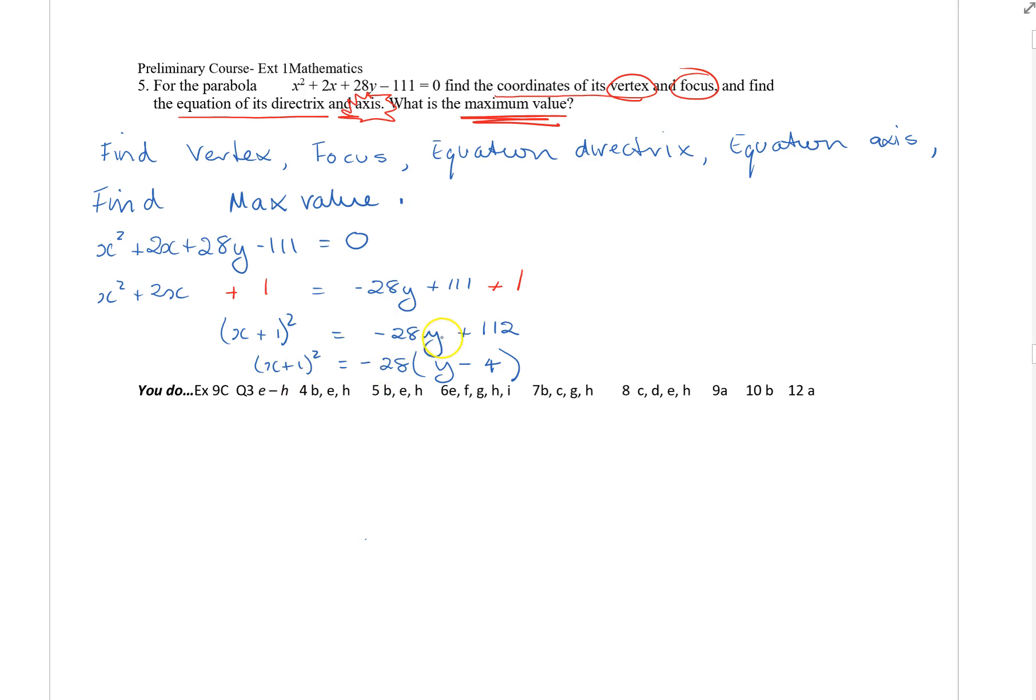So we get that x plus one all squared. Now remember that we want a single y inside the bracket in this case, so we're going to take out negative 28. We can't have a negative y in there, so we need to take out negative 28.